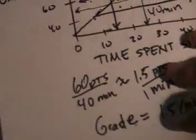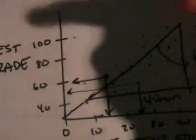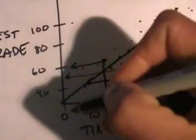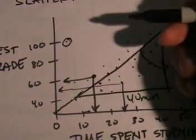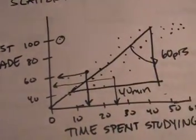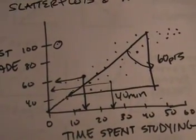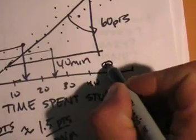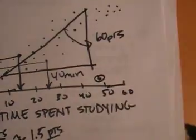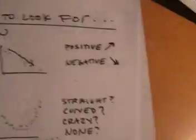There was an outlier here. What do I mean by outlier? Look at this guy — spent about two minutes studying and got 100. And this other outlier — that's me. I spent 50 minutes studying and got a 30.